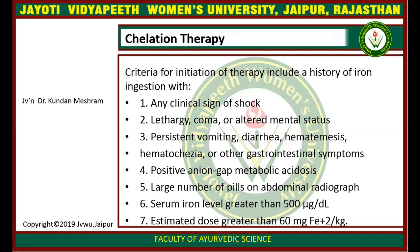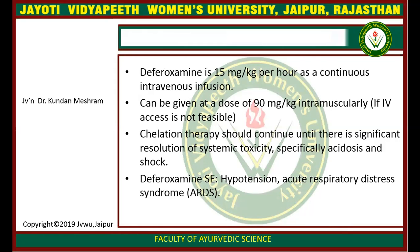Chelation therapy: the criteria for initiation of chelation therapy include history of iron ingestion with any clinical signs of shock, lethargy, coma, and altered mental status, persistent vomiting and diarrhea, hematemesis, or other gastrointestinal symptoms. Also, positive anion gap metabolic acidosis, large number of pills on abdominal radiographs, serum iron level greater than 500 micrograms per dL, and estimated dose greater than 60 mg of iron per kg. Desferrioxamine is given at 50 mg per kg per hour as continuous intravenous infusion, or 90 mg per kg intramuscularly if IV access is not feasible. Chelation therapy should be continued until there is significant resolution of systemic toxicity, especially acidosis and shock.